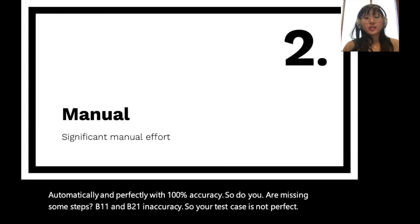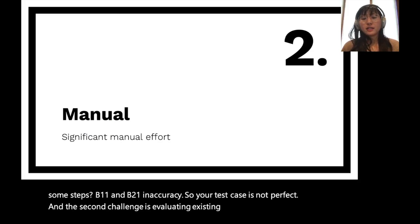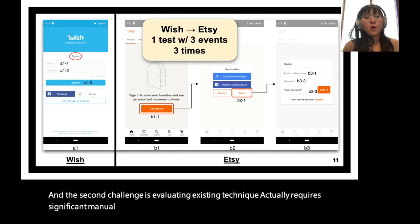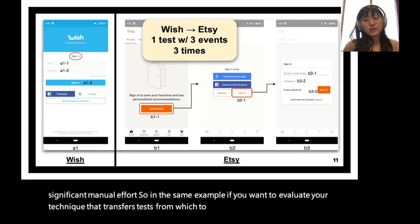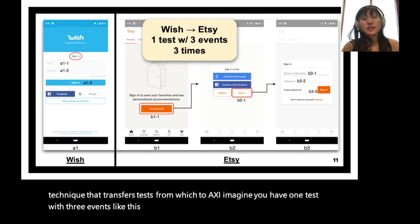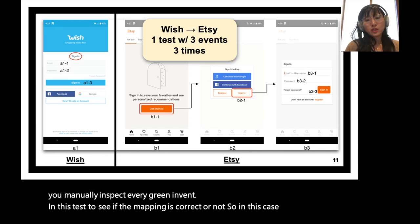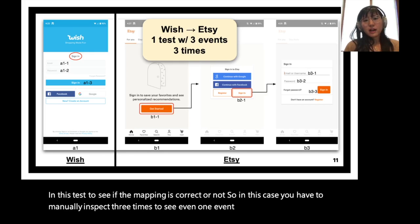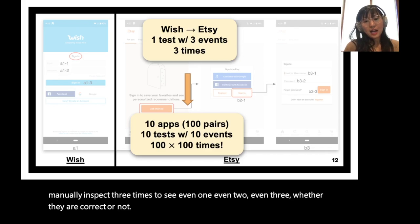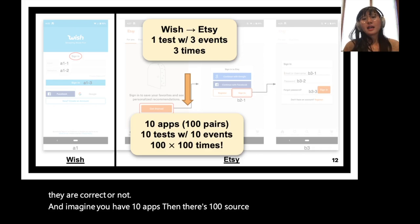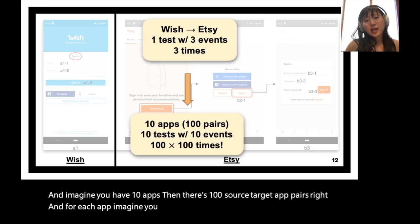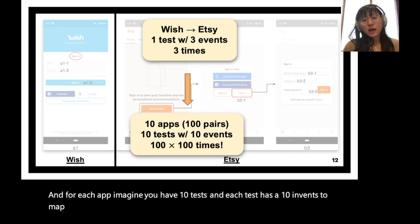The second challenge is that evaluating existing techniques requires significant manual effort. In this same example, if you want to evaluate your technique transferring tests from Wish to Etsy, you have one test with three events. Existing work requires you to manually inspect every GUI event to see if the mapping is correct. With 10 apps, that gives 100 source-target app pairs. If each app has 10 tests and each test has 10 events, you end up having to manually inspect 10,000 times — which is just not realistic.